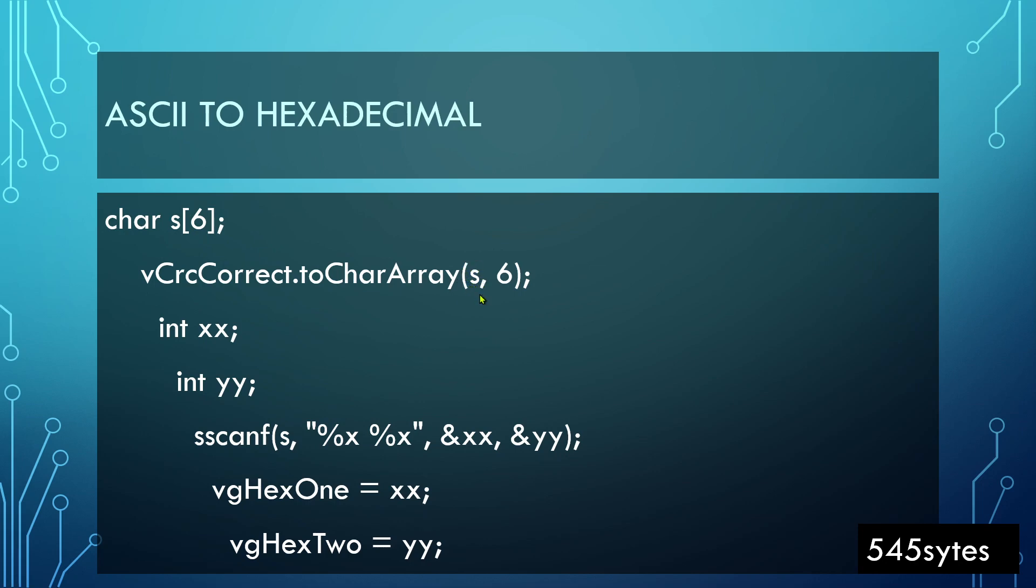I have defined two variables, integers xx and integer yy. Then I have used sscanf, this is a C++ function which converts character into expected format. You see I have applied this function on the array s and I have told this function that I am expecting %x %x. The x is representing hexadecimal here, so I have told the code that I am expecting these to be hexadecimal.